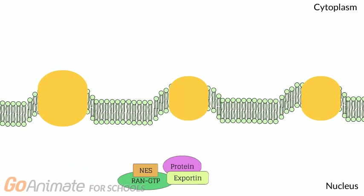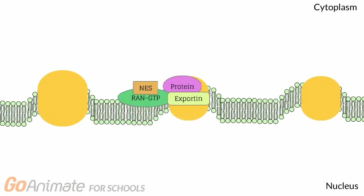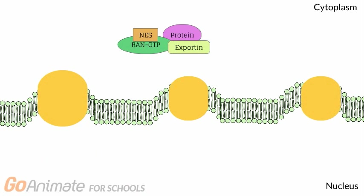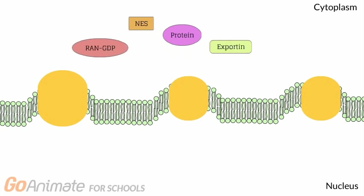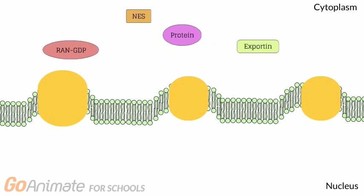After this, the export complex travels through the nuclear pore into the cell's cytoplasm, where the complex separates due to the conversion of RAN-GTP to RAN-GDP. This causes the release of the large protein into the cytoplasm.